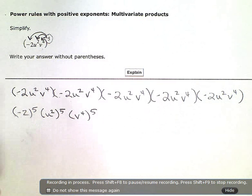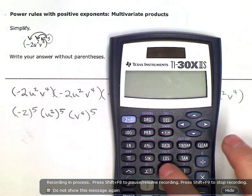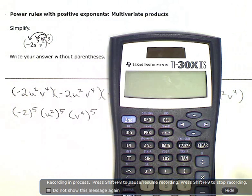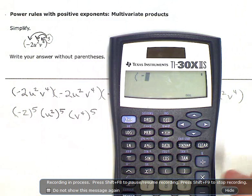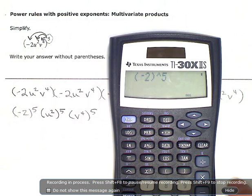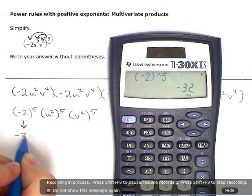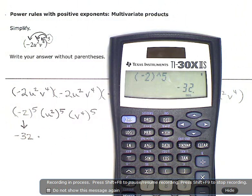Negative 2 to the fifth I can actually just evaluate. So, using my calculator here, I can put in negative 2 raised to the fifth power. Make sure you put parentheses around the negative to keep it inside. And I get negative 32.